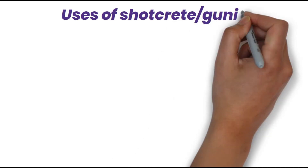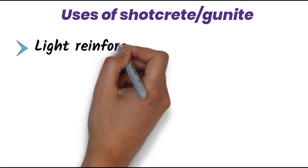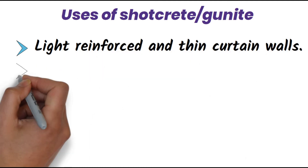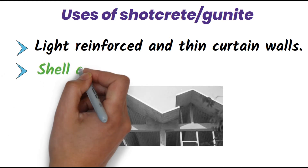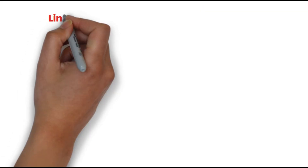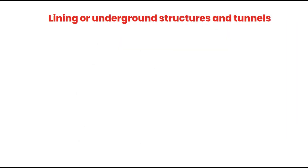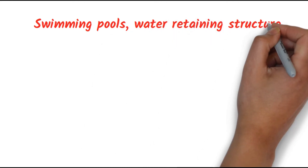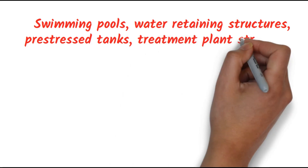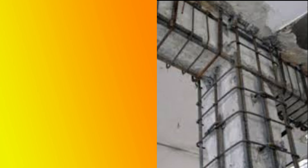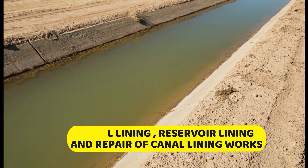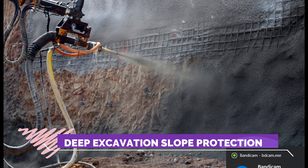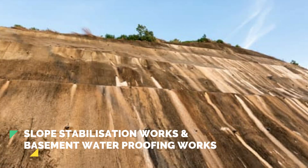What are the uses of shotcrete or gunite? They are used for light, reinforced, and thin curtain walls. They are also used for making shell and folded roofs, and for lining of underground structures and tunnels. Swimming pools, water-retaining structures, pre-stressed tanks, treatment plant structures, etc., use this shotcrete or gunite technology. They are also used for concrete repair and retrofitting works, structural steel encasing works, canal lining, reservoir lining, and repair of canal lining works. They are used for deep excavation slope protection, slope stabilization works, and basement waterproofing works.